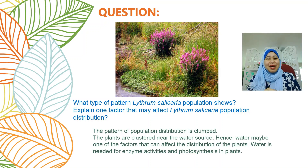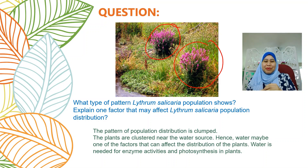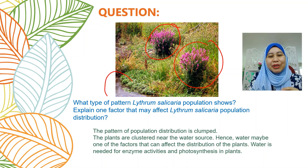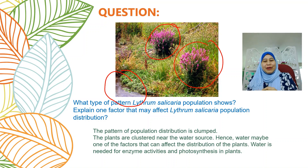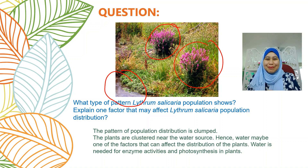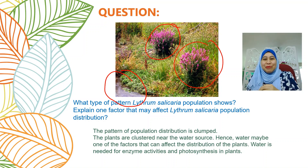The pattern of population distribution is clump. Remember, we have three types of patterns, and this one shows clump distribution — one cluster here and one cluster here. One factor that may affect the distribution of Lythrum salicaria is water, because you can see the water resource is nearby. Water is needed for enzyme activities, especially for photosynthesis, and photosynthesis is needed for plant growth. If you want more questions, there is a link below the video in the additional info section — just click the link to get the quiz on this topic.